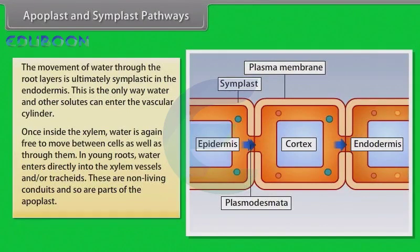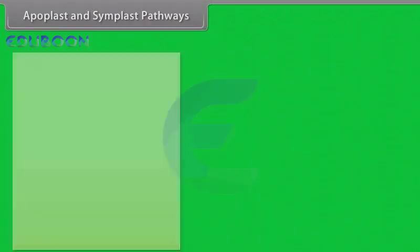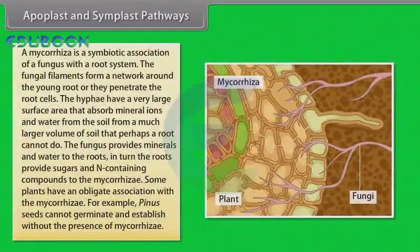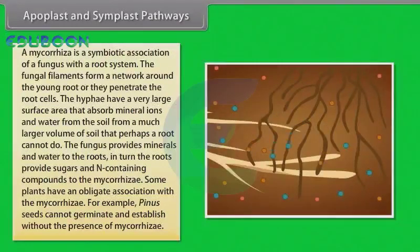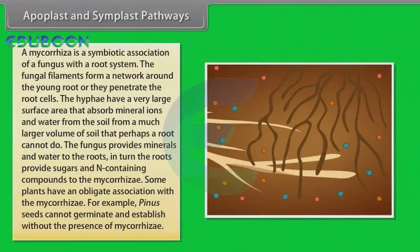Some plants have additional structures associated with them that help in water and mineral absorption. A mycorrhizae is a symbiotic association of a fungus with a root system. The fungal filaments form a network around the young root or they penetrate the root cells. The hyphae have a very large surface area that absorbs mineral ions and water from the soil from a much larger volume of soil than perhaps a root can do. The fungus provides minerals and water to the roots; in turn, the roots provide sugars and nitrogen-containing compounds to the mycorrhizae. Some plants have an obligate association with the mycorrhizae — for example, pinus seeds cannot germinate and establish without the presence of mycorrhizae.